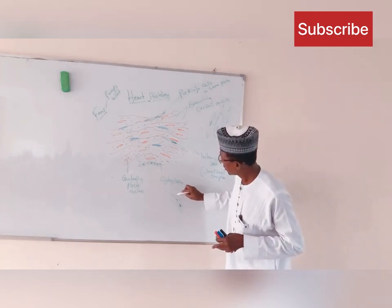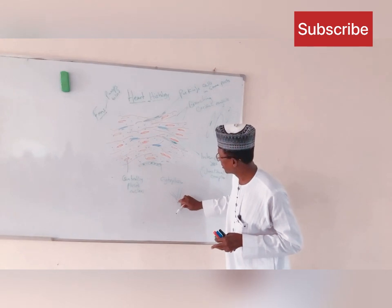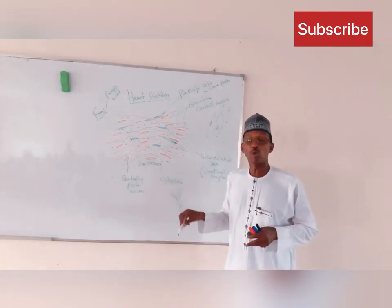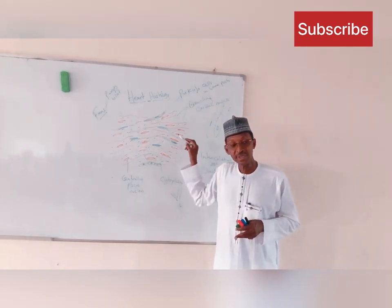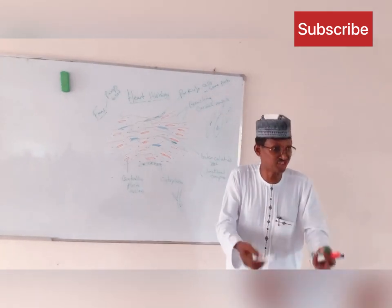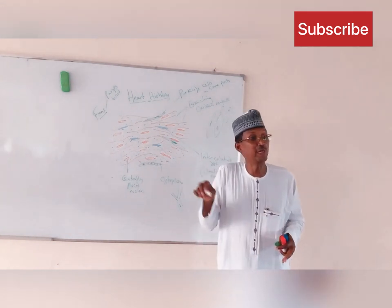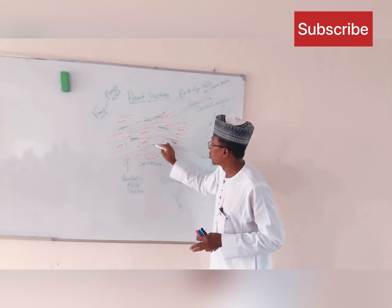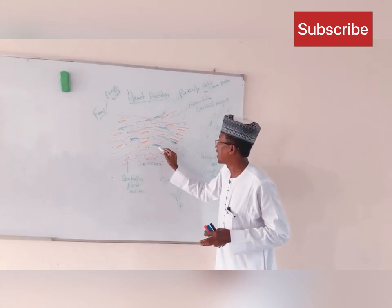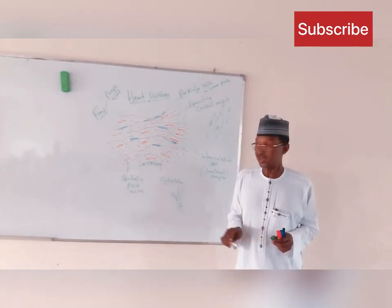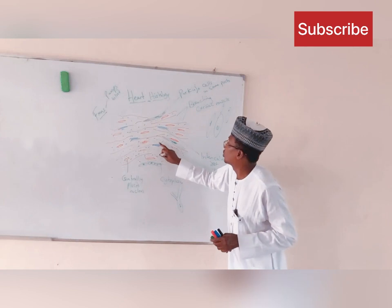Smooth muscle cells do not branch, but the cardiac muscle — if this is a single cardiac muscle with a centrally placed nucleus — may branch like this. So one of the differences between cardiac muscle and smooth muscle is that cardiac muscles branch and re-branch. This is the second difference apart from the centrally located nucleus. Similarly, you have what you call junctional complexes — the intercalated disc — between one cell and another.